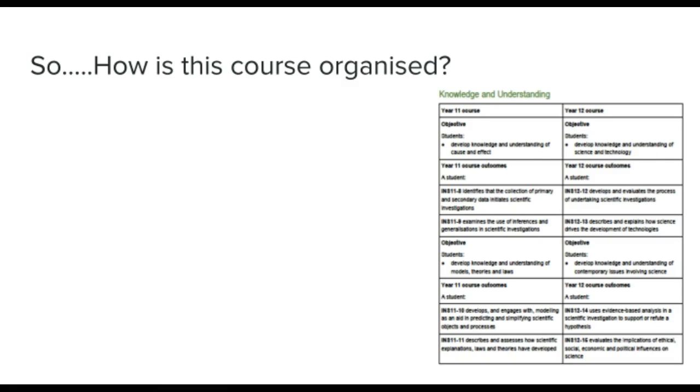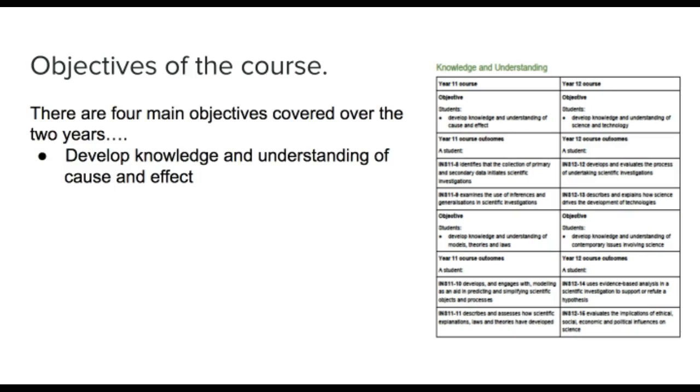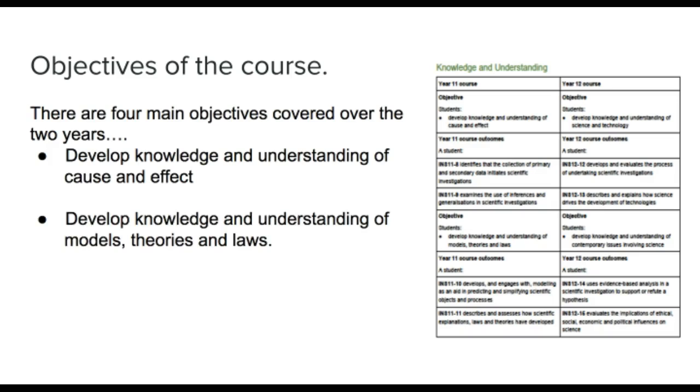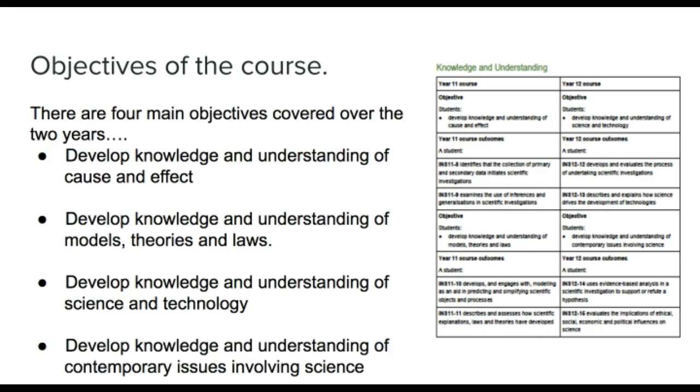So, how is this course organized? There are four main objectives covered over the two years. The first one is develop knowledge and understanding of cause and effect. Second, develop knowledge and understanding of models, theories and laws. Next, develop knowledge and understanding of science and technology. And the last one is develop knowledge and understanding of contemporary issues involving science.